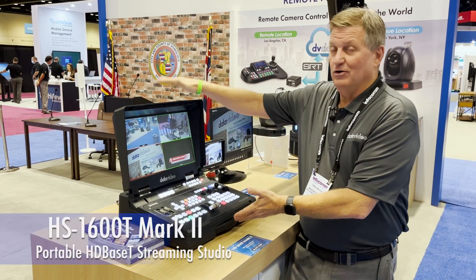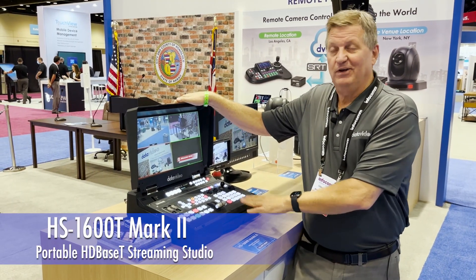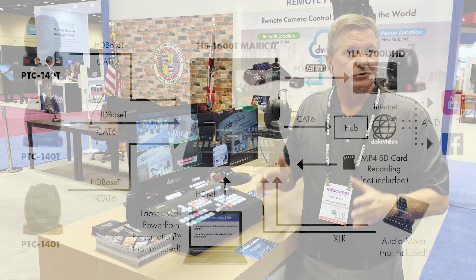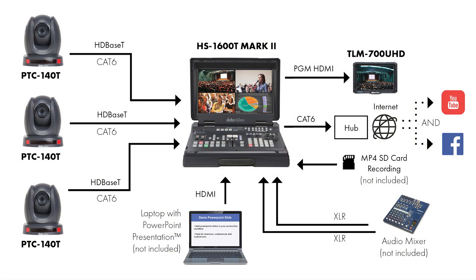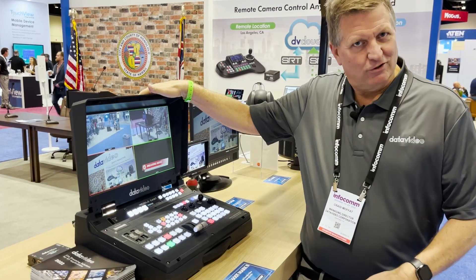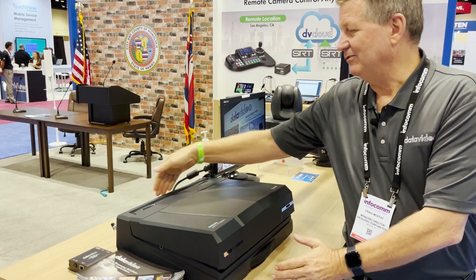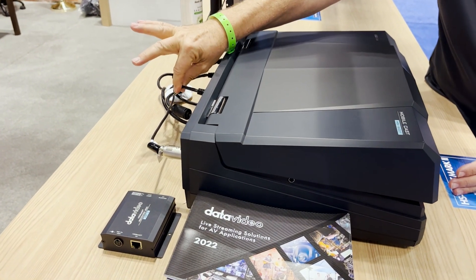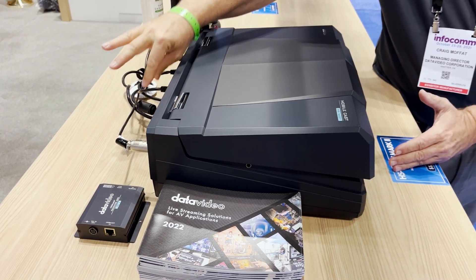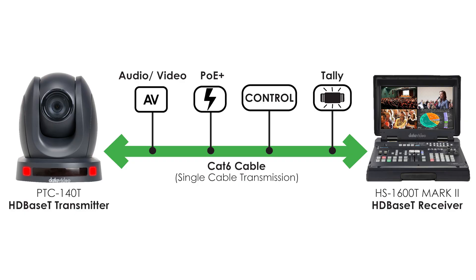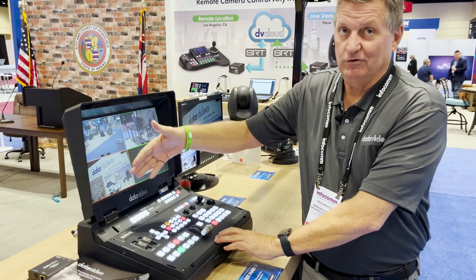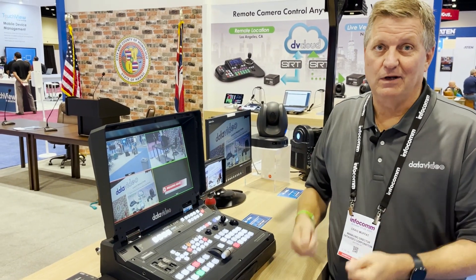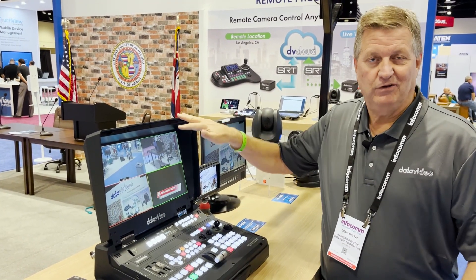This is a new concept — not a new product from Datavideo. It's the HS1600T, but we're showing it with some new ideas on how to use it. A quick reminder: this is an HDBaseT switcher. If I put this case down, you can see back here I have multiple cables — just a network cable connected directly to my camera. The switcher powers the camera, controls the camera, and brings the video signal in, which gives you an idea how easy it is to set up a production with the HS1600T.